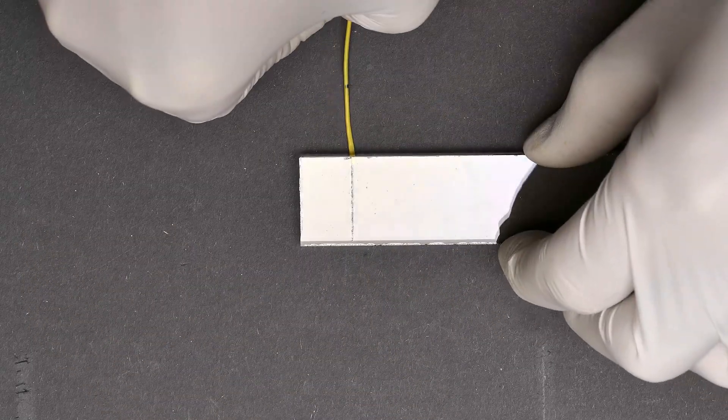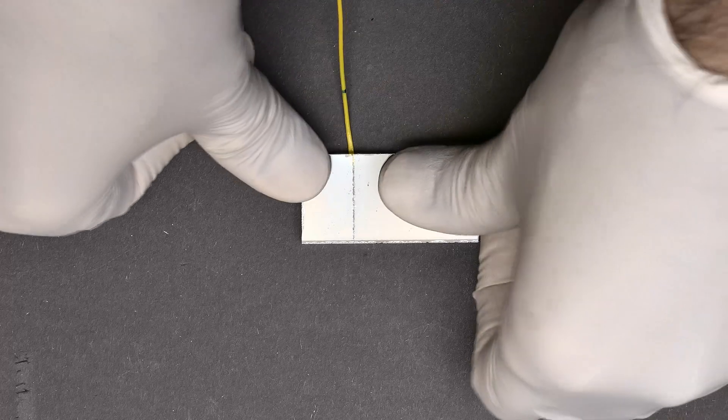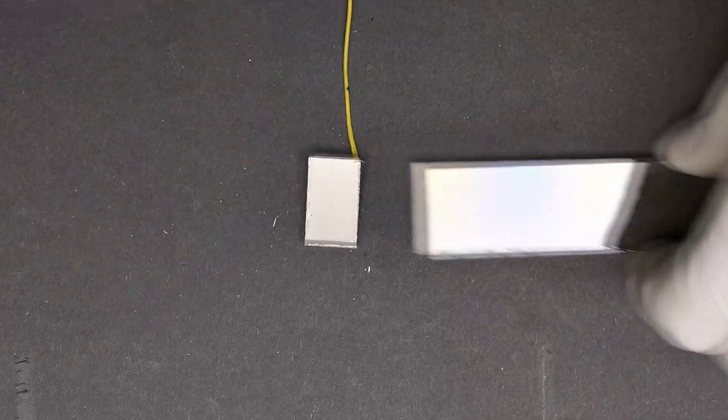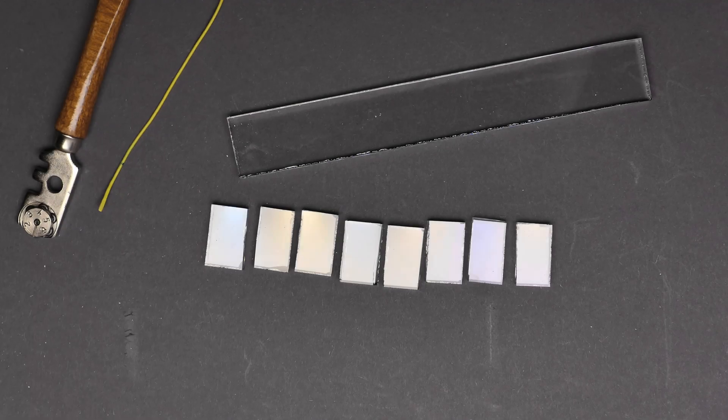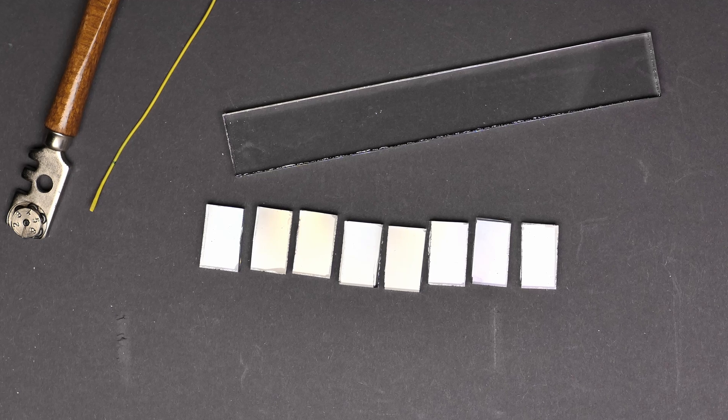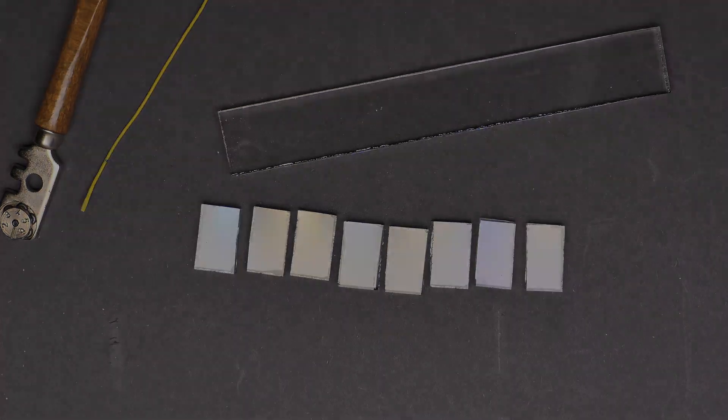At least two blanks will be needed for the interferometer. One for the beam splitter and another for mounting one of the corner cube reflectors. However, I recommend cutting a few spare blanks.